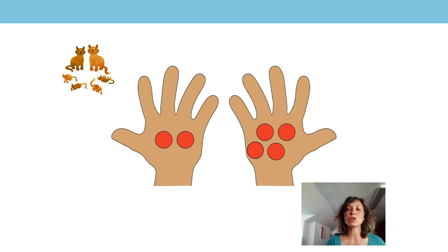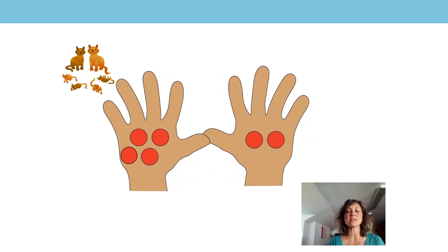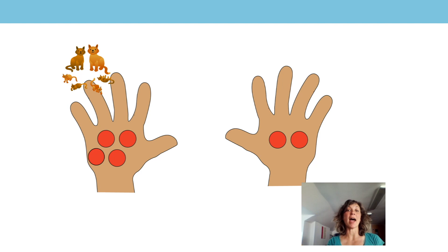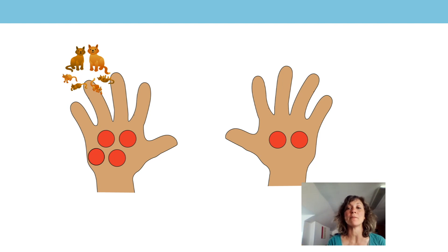Now, keeping two objects in one hand and four in the other, can you swap your hands over? So now I have four kittens and two cats. What does the four represent? Yes, the four represents the four kittens. And what does the two represent? The two adult cats. Do I still have six all together? Yes, I still have six cats all together.